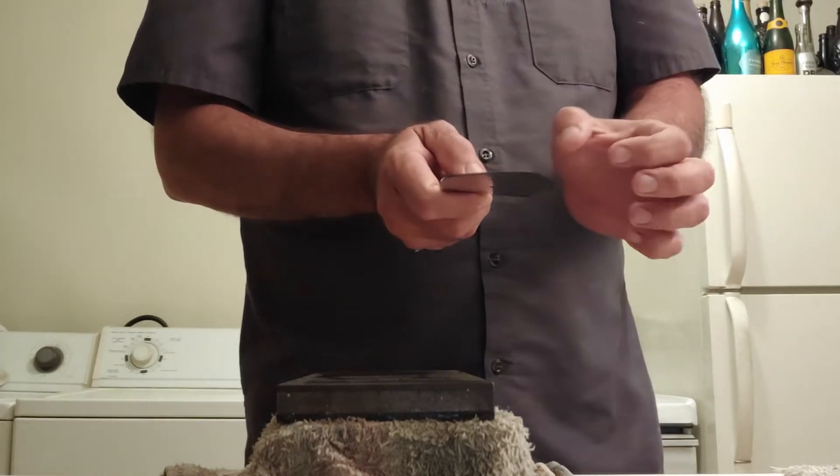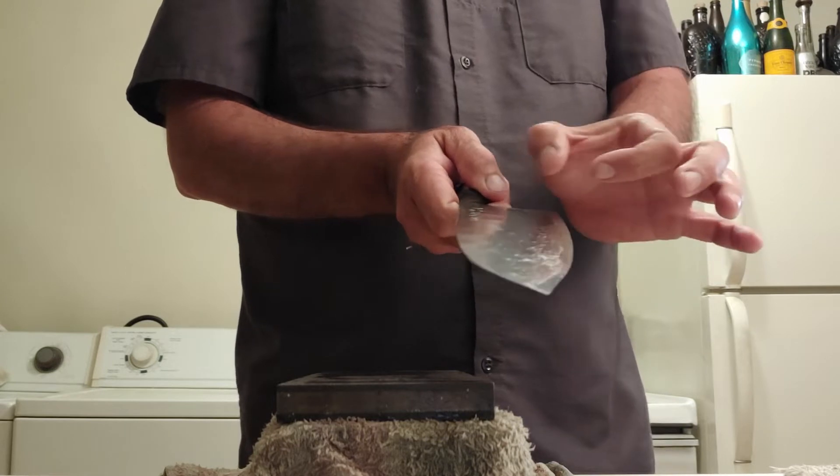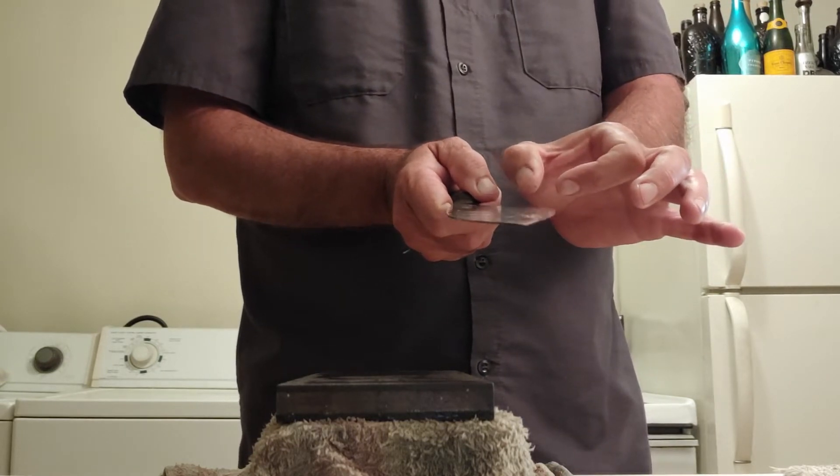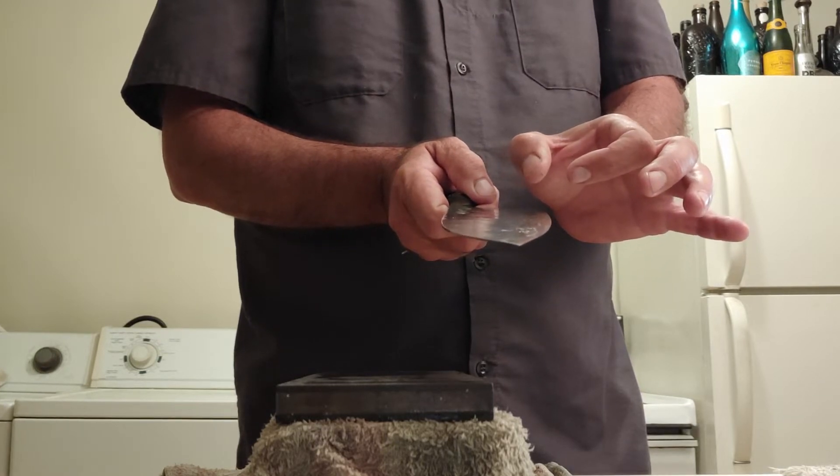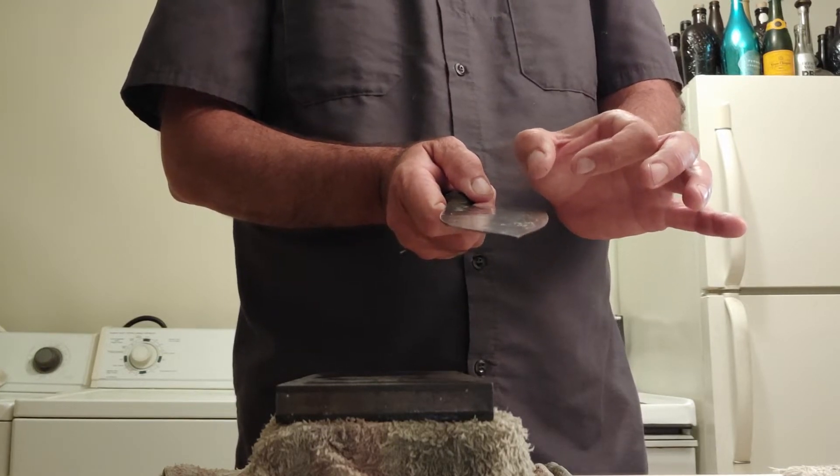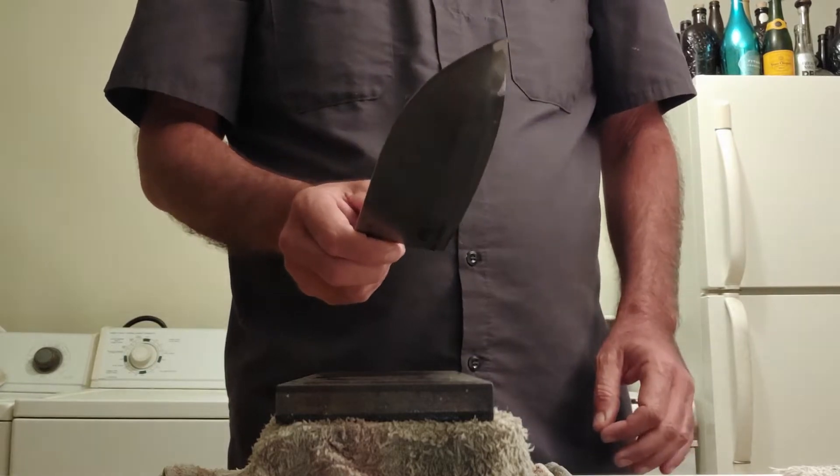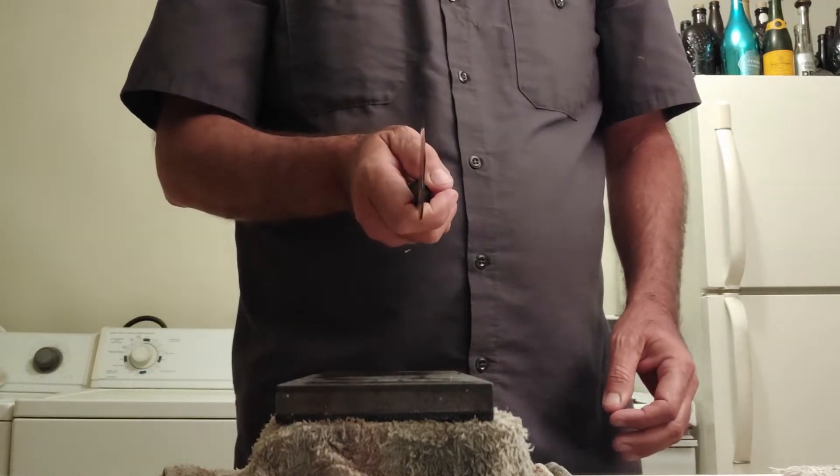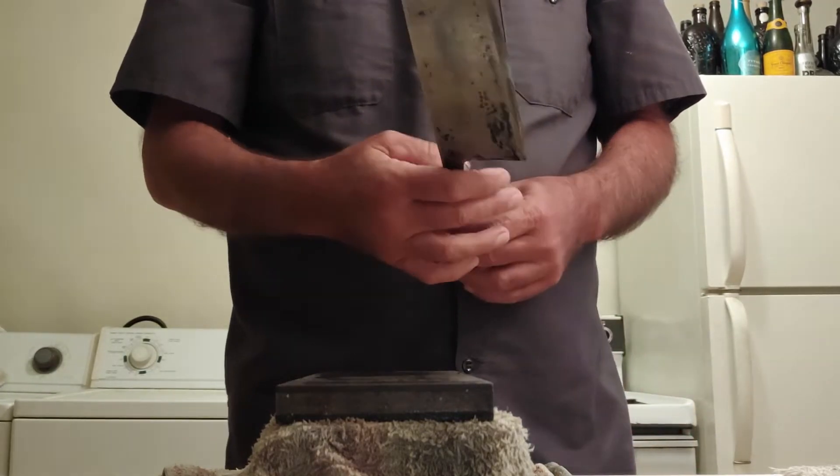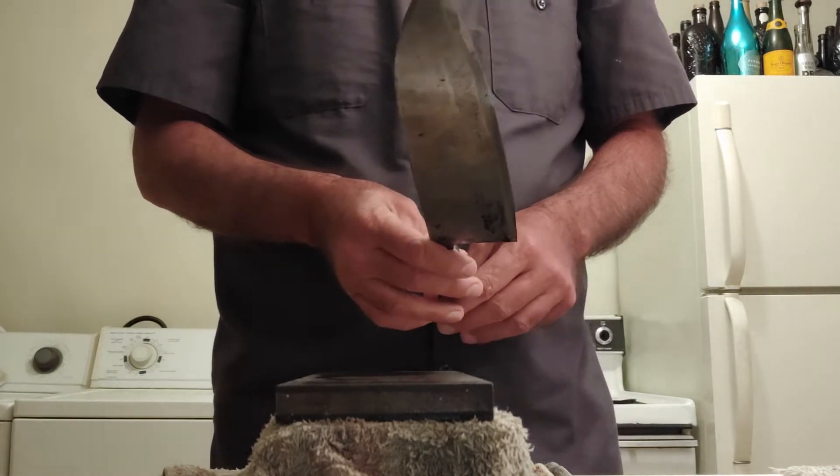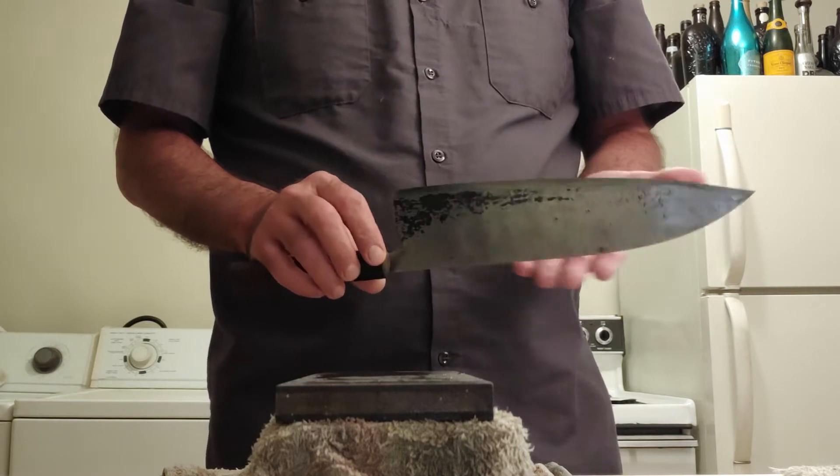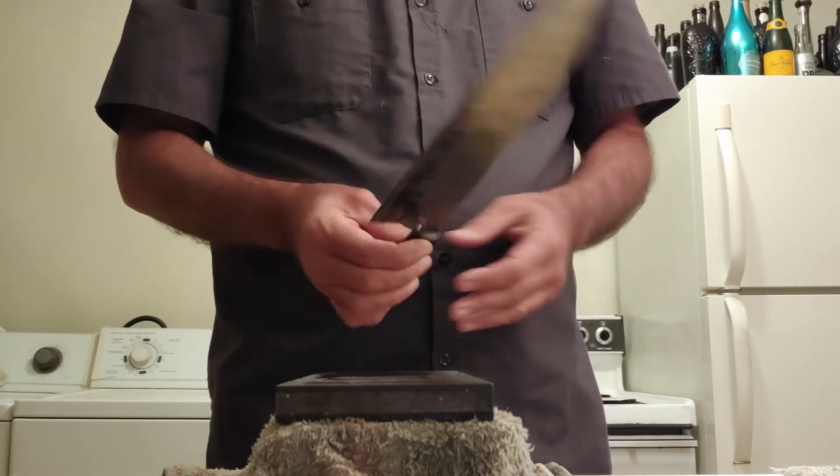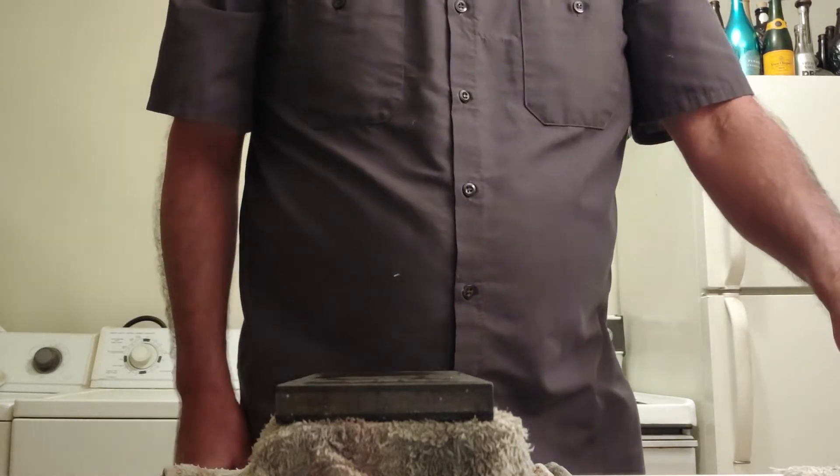And the way they're intended to be sharpened is that this quarter to half inch wide bevel at the bottom gets sharpened all at the same time, more or less. And the idea being that it produces a zero grind at the edge. So it's kind of a wide bevel, not as wide as a single bevel knife or a wide bevel double bevel knife.